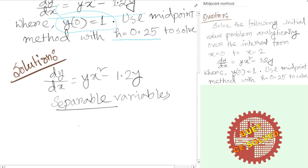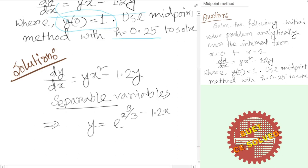We will discuss the analytical solution directly. We will write y value as y equals e to the power x cubed by 3 minus 1.2x. So this is the analytical solution that we will use to compare the true value.